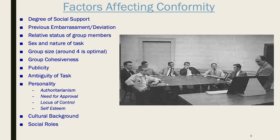When behavior is public — meaning other people will know what you're doing — you're much more likely to conform than if you were writing answers down privately. The more ambiguous the task is, the more likely you are to conform. A task like the autokinetic effect creates a lot of conformity pressure precisely because the situation is so unclear.